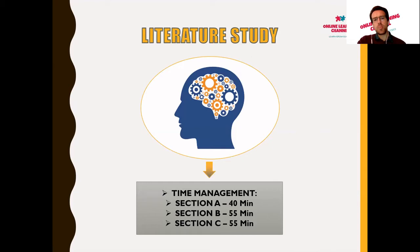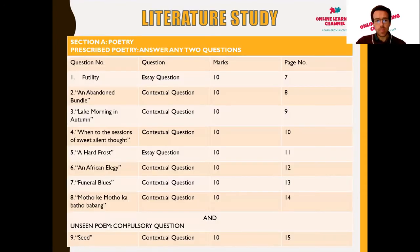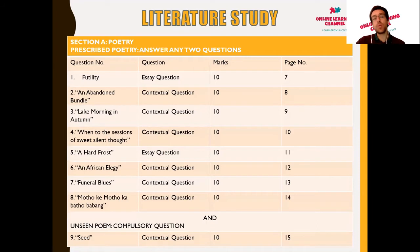For time management, Section A should have 40 minutes dedicated to answering its questions, Section B 55 minutes, and Section C 55 minutes. Regarding the variety of choice: Section A, the prescribed poetry section, requires you to answer any two questions from a list of no less than nine pieces that have been identified.